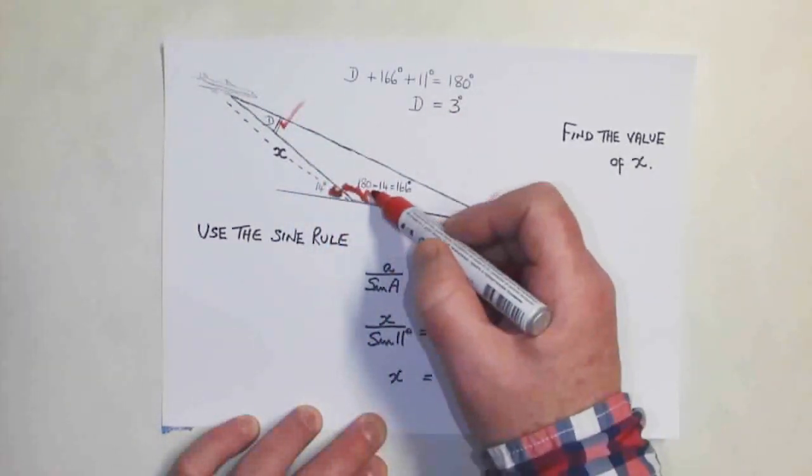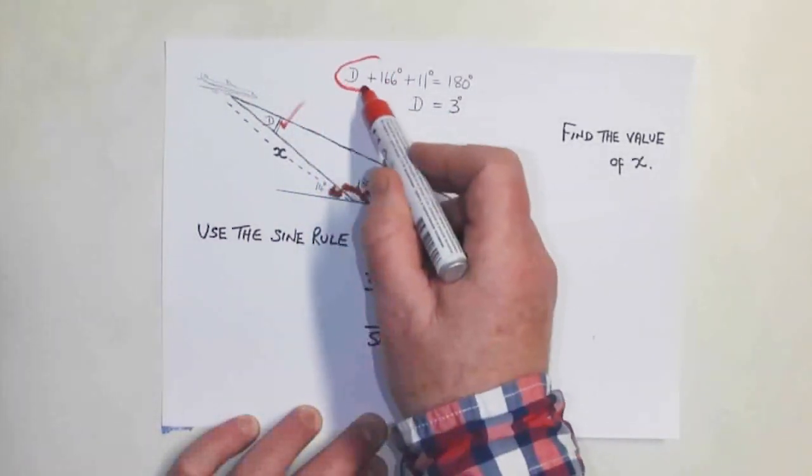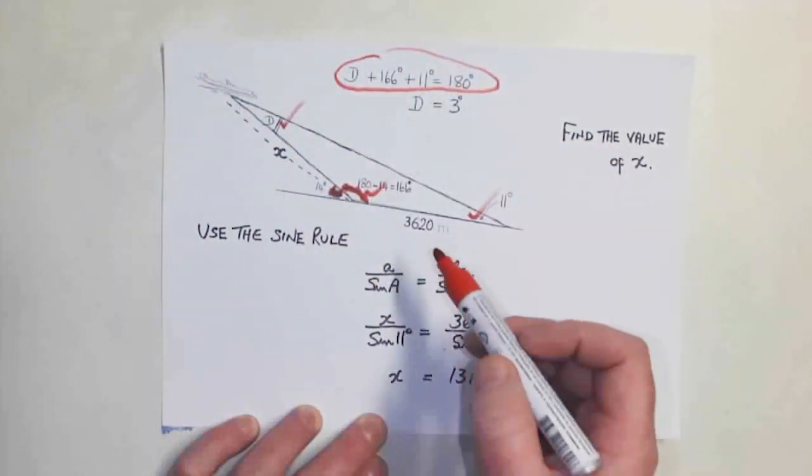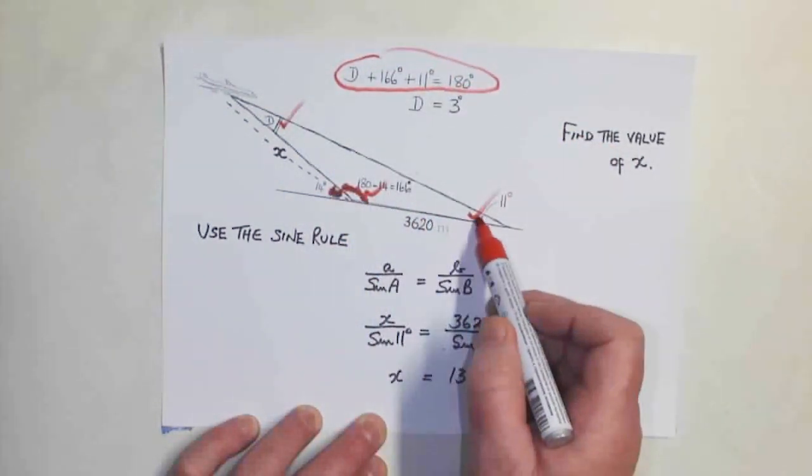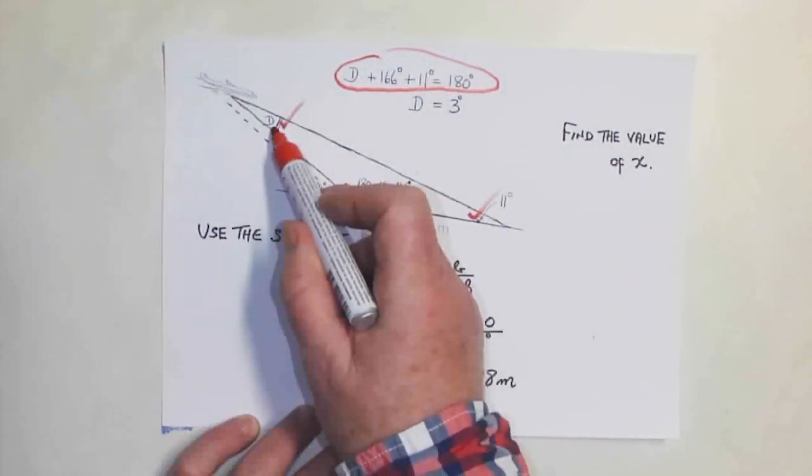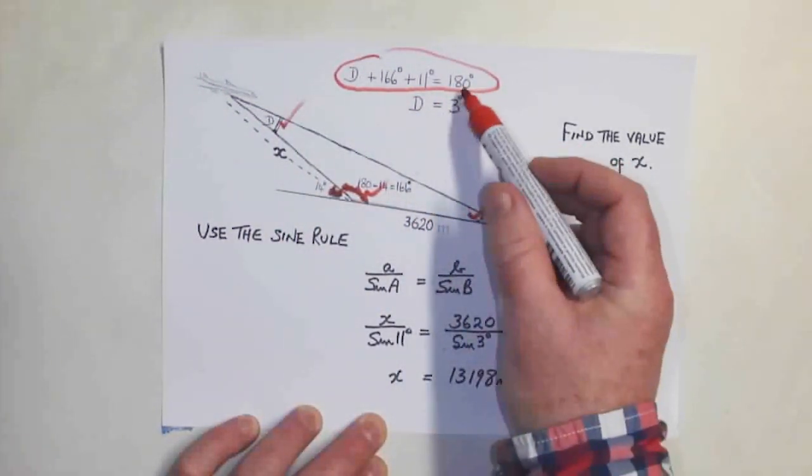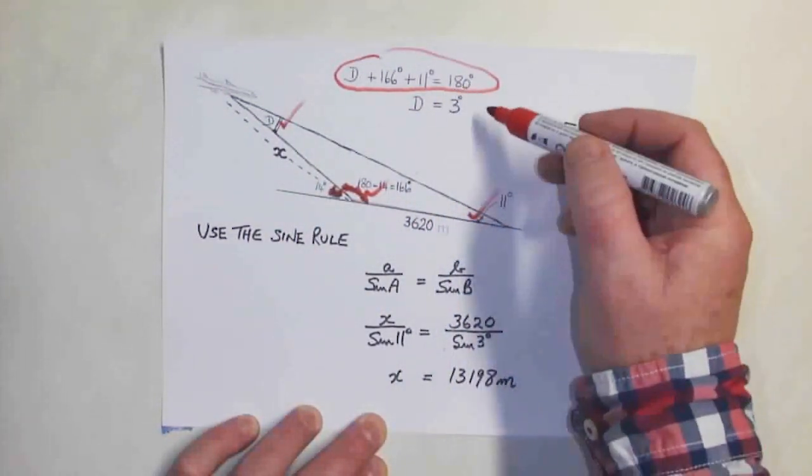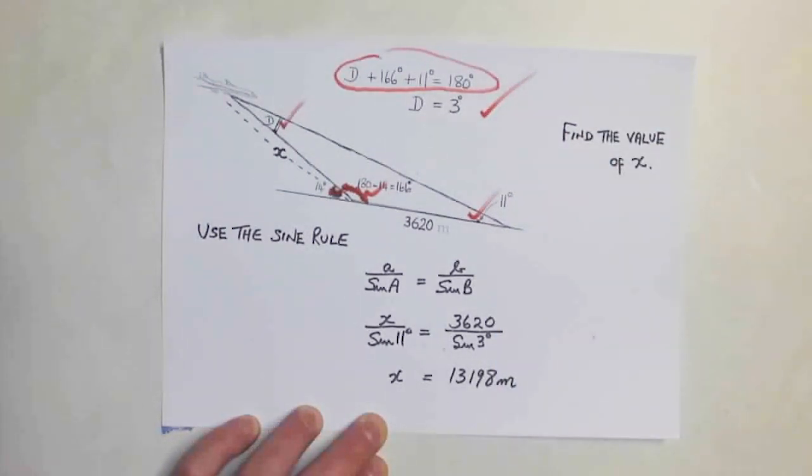166 plus 11 plus the angle up here that I've called d equals 180. Subtract 166 and 11 from 180, and you get d equals 3. So this here is 3 degrees.